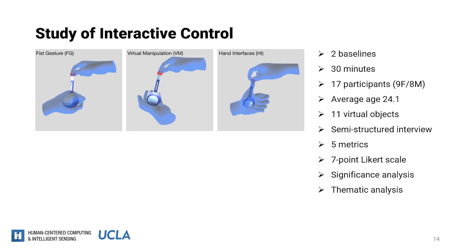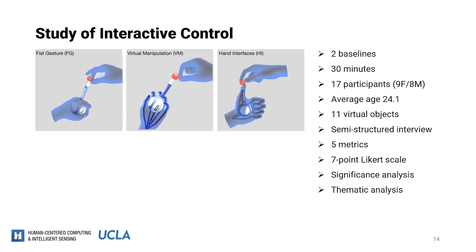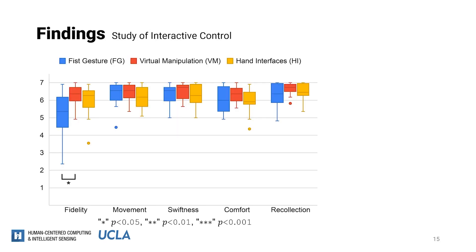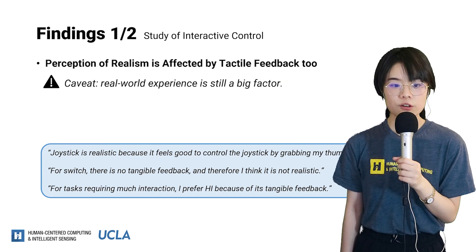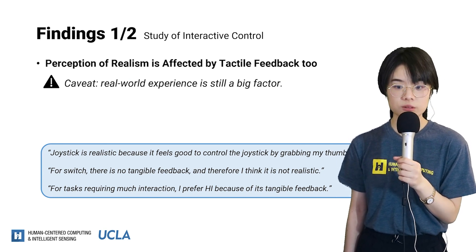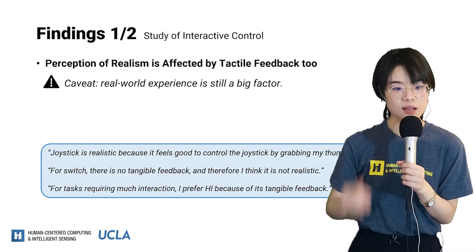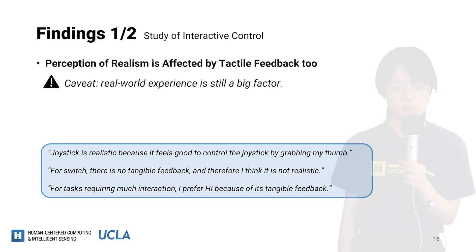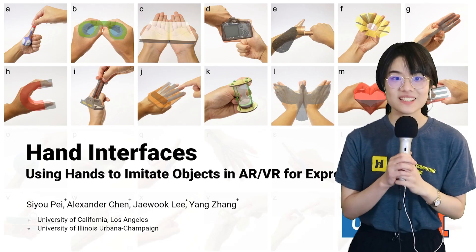Now let's move on to the study of interactive control. In both baseline techniques, participants manipulated virtual objects with their other hand in the air. The study procedure and result analysis were the same as the previous study. Hand interfaces were comparable with other techniques across all metrics, with no significant differences found. From the thematic analysis, we found that tactile feedback contributed to the perception of realism, and the average fidelity score in interactive control was significantly higher than in object retrieval, which we suspect was due to tactile feedback. Tactile feedback also increased comfort and correlated with joyfulness, as many participants expressed excitement and amusement. Thank you for listening — I'm happy to take questions.